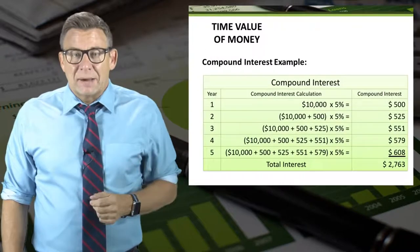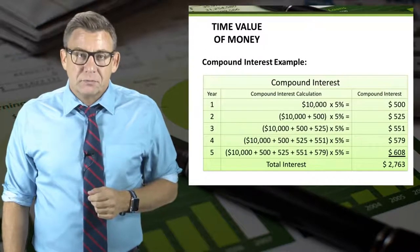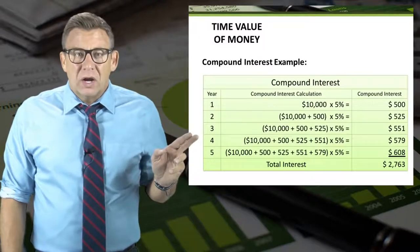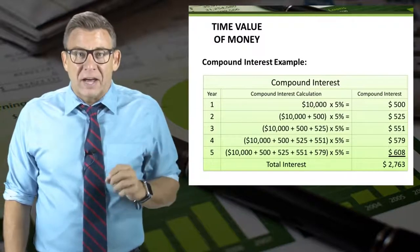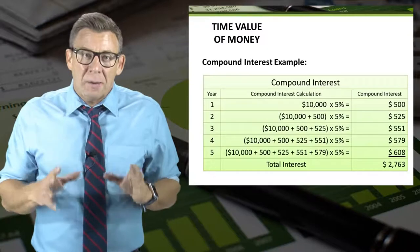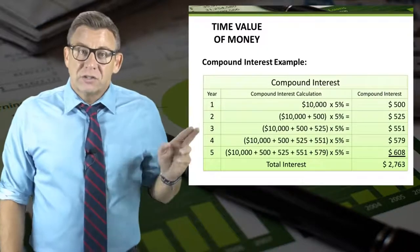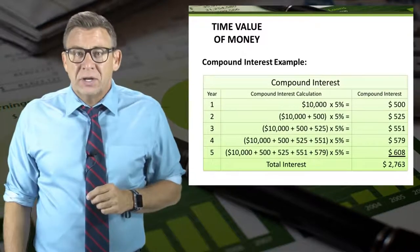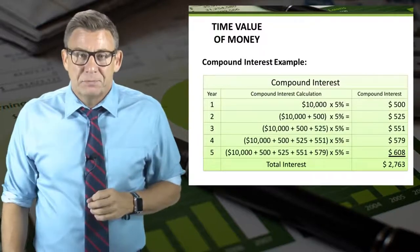Here is an example of compound interest. The same $10,000 earning 5% annual compound interest results in $2,763 of interest over that same time period.